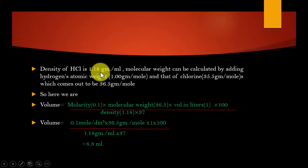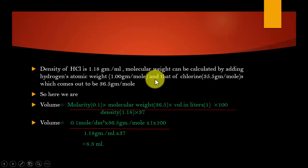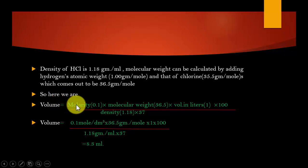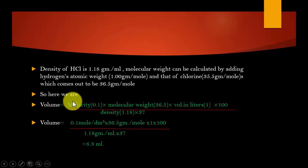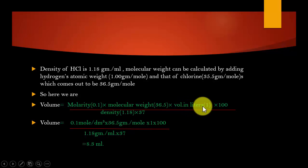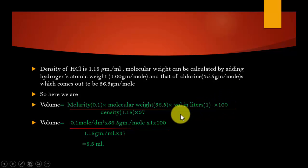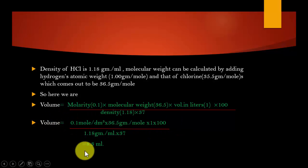The density of HCl is 1.18 g/mL. The molecular weight is calculated by adding hydrogen's atomic weight (1.00 g/mol) and chlorine's atomic weight (35.5 g/mol), giving 36.5 g/mol. Plugging in: volume equals 0.1 (molarity) times 36.5 (molecular weight) times 1 liter times 100, divided by 1.18 times 37. After calculation, we get 8.3 mL.